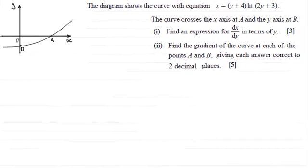Hi. Now in this question we're given this diagram here and it shows the curve with equation x equals y plus 4 multiplied by the natural log of 2y plus 3. And the curve crosses the x-axis at a and the y-axis at b.